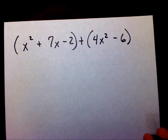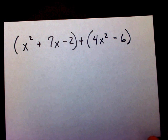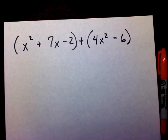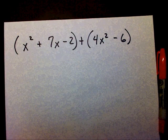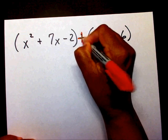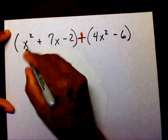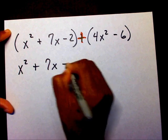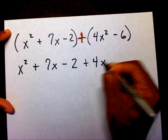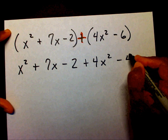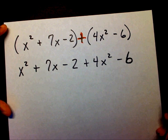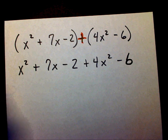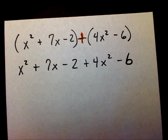Like we talked about in the previous videos, when you add any objects, you just want to put them together. Since I have a plus sign here, I'm just going to drop my parentheses and write x squared plus 7x minus 2 plus 4x squared minus 6. Since I just dropped my parentheses, I can combine like terms — that's all I need to do now.